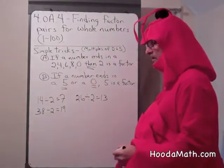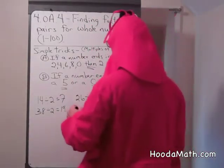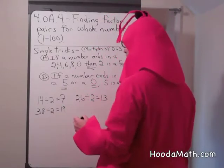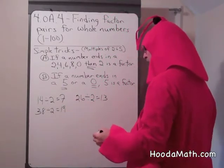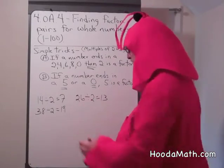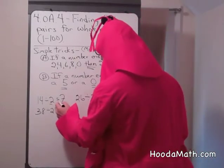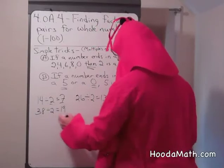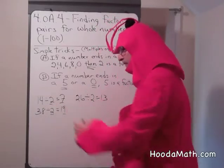As you can see, numbers that end in 2, 4, 6, or 8 are multiples of 2, and these are the two factors. 2 and 7 are factors of 14. 2 and 19 are factors of 38.